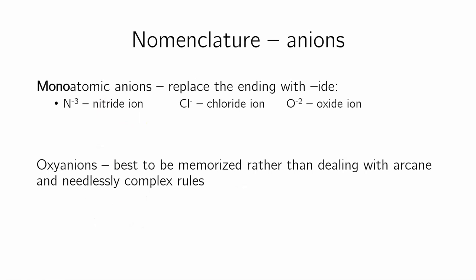How do we name anions? It's not so difficult, but it's a little bit more complicated because we have to change the name a little bit. If it's one element, it's just an element, what I do is I drop the end, and I replace it with an ide. And I call it something ide ion. So, oxygen ion, I don't write oxygen ion, I drop the end, and I call it oxide ion. This is the oxide ion.